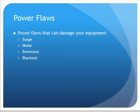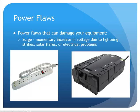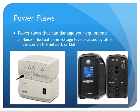This brings us to power faults — things that can damage your equipment — such as surges, noise, brownouts, or blackouts. A surge is a momentary increase in voltage due to lightning strikes, solar flares, or electrical problems. Surge protectors — including larger units with a battery — can clamp down that spike, send it to ground, or use it up through resistance so it does not get passed on to your equipment. Noise refers to fluctuations in voltage caused by other devices on the network or EMI; voltage regulators can help smooth that out.